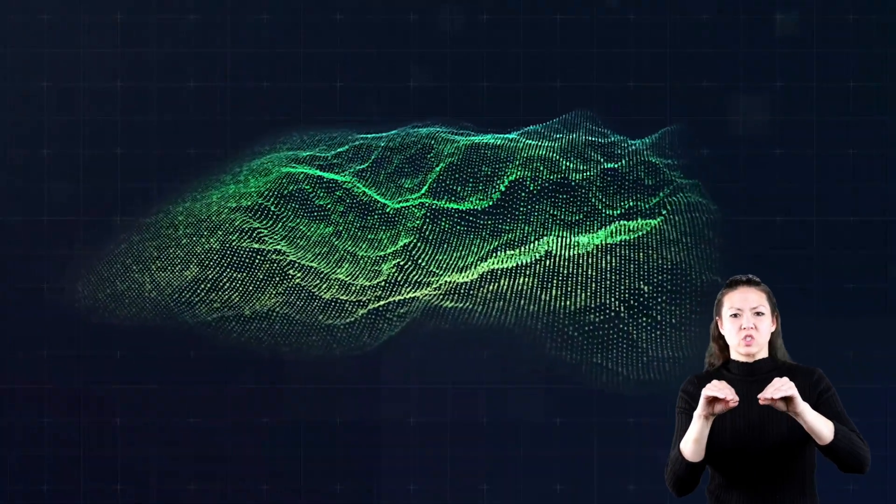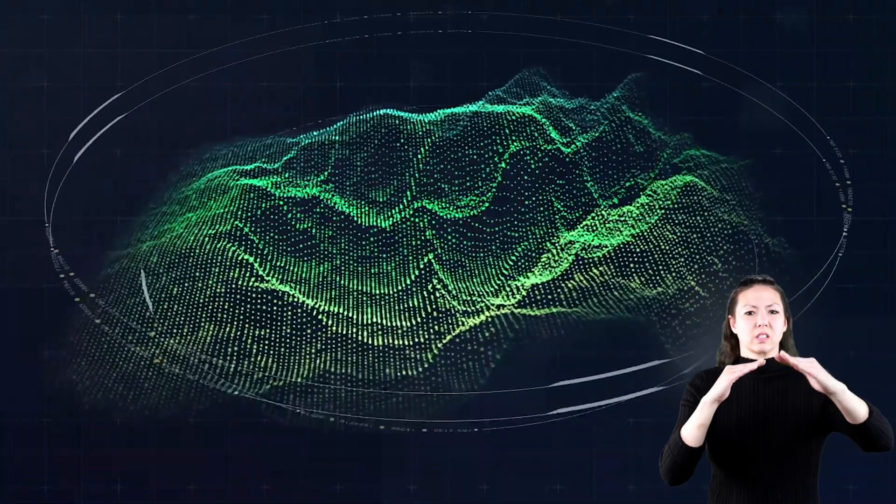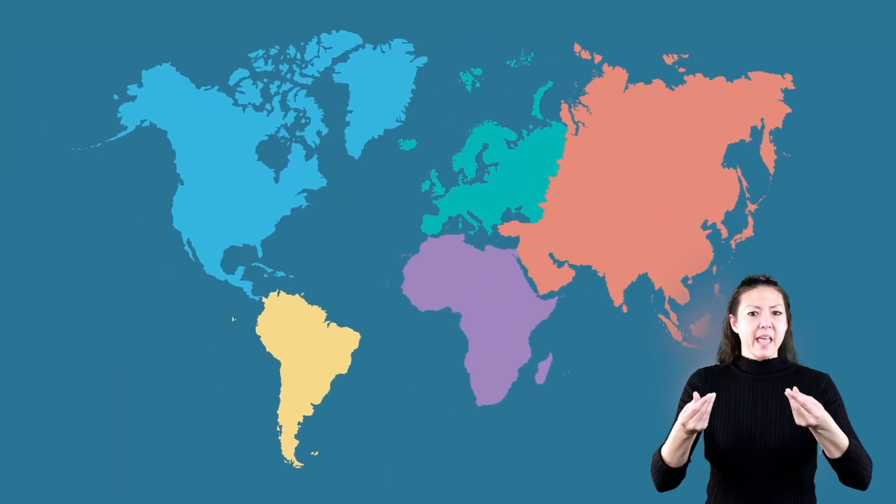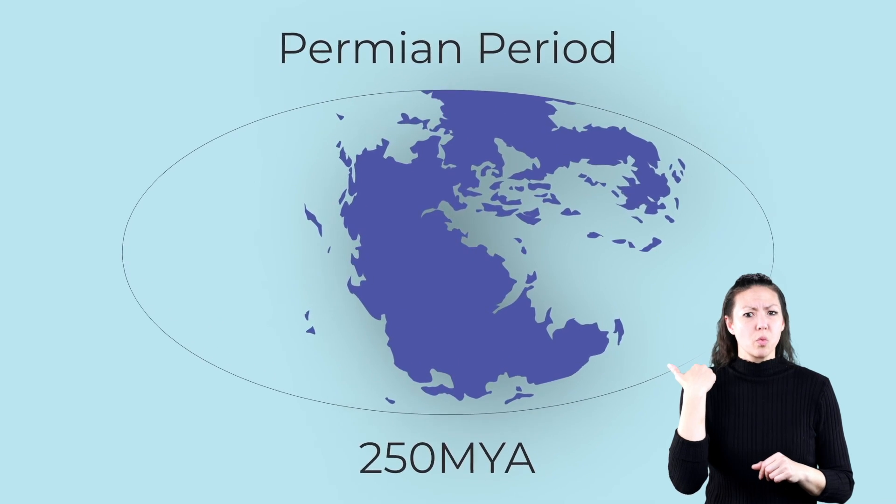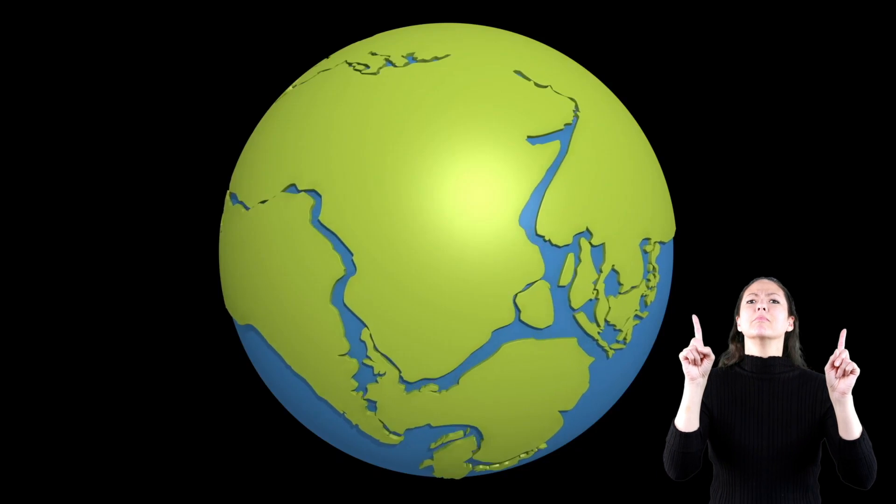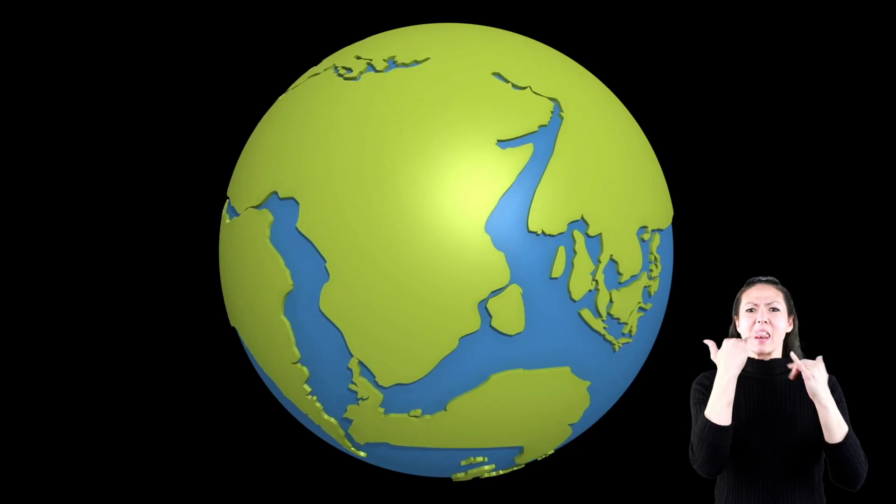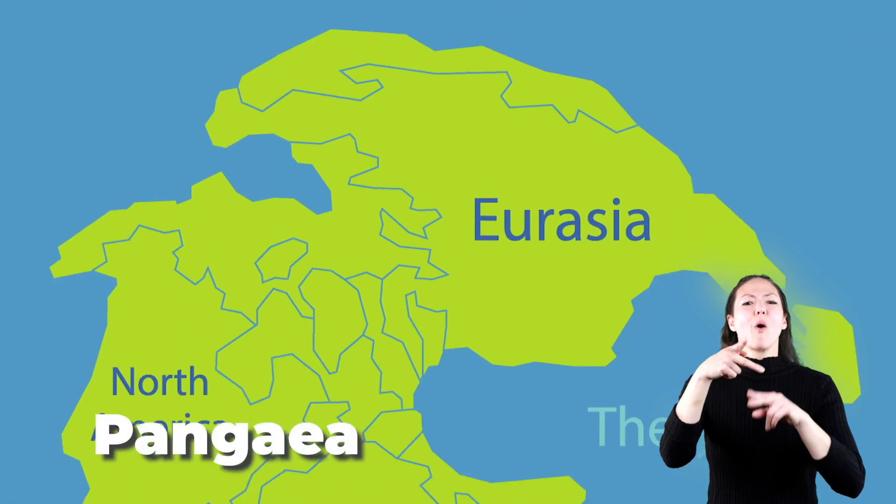All this shifting and movement is how all the different types of terrains on earth were formed, and the continents themselves. Believe it or not, over 250 million years ago, all the different continents on earth were actually just one giant land mass called Pangaea.